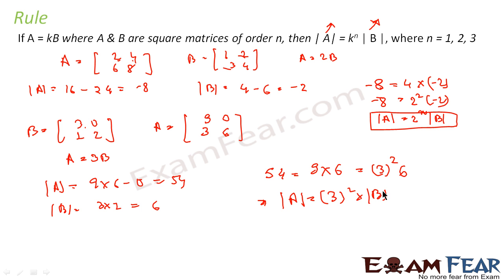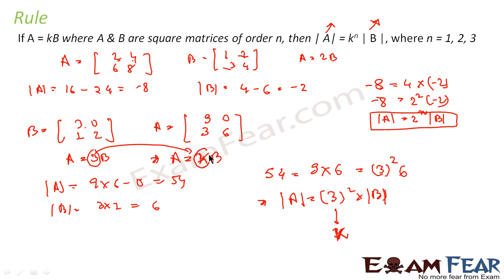Here 3 is my k, because my A was k into B and k is nothing but 3. And 2 is nothing but n — the order of the matrix. Since the order of the matrix is 2×2, n is 2 in both examples.